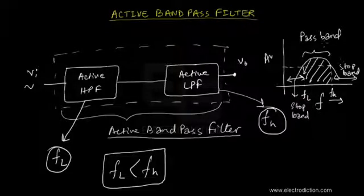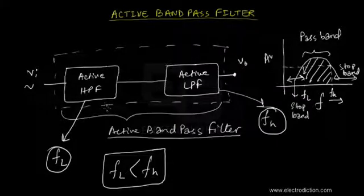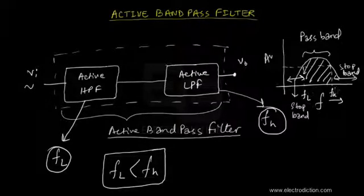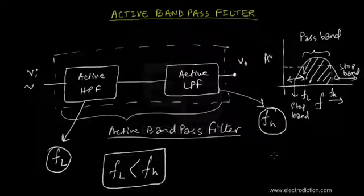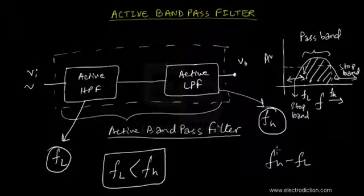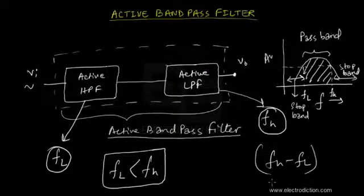The bandpass filter is a filter that allows input electrical signals with frequencies between the upper cutoff frequency of the low pass filter and the lower cutoff frequency of the high pass filter to appear at its output unattenuated. The rest of the frequency components outside this range — FH minus FL — would be attenuated by the filter circuit itself.